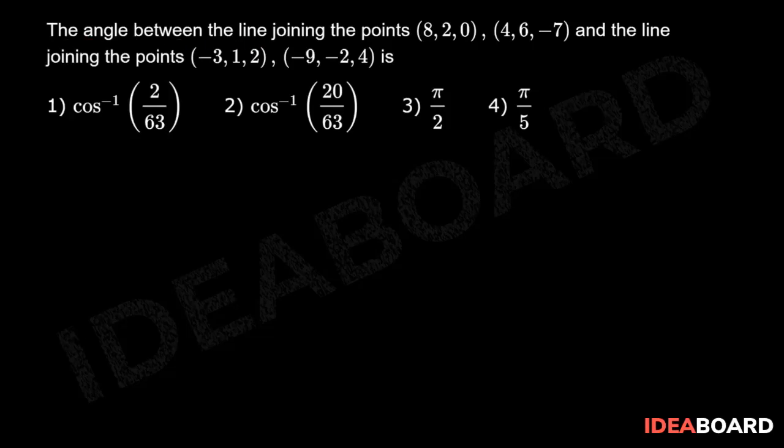The angle between the line joining the points (8, 2, 0), (4, 6, -7) and the line joining the points (-3, 1, 2), (-9, -2, 4) is.